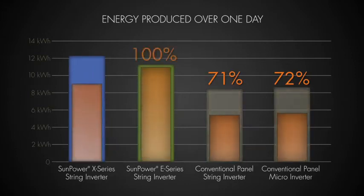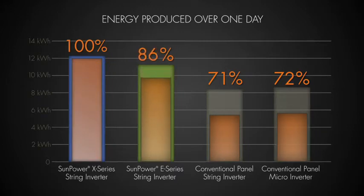Because of their unique design, the SunPower panels performed much better, with the E20 panel producing 86% and the X21 producing 92% when compared to their unshaded energy production.